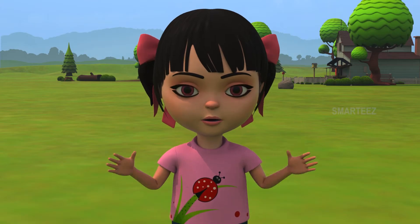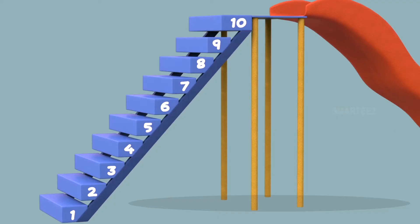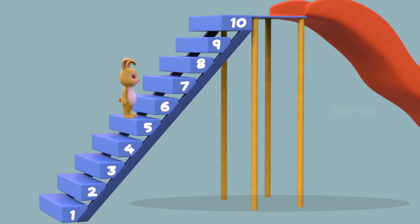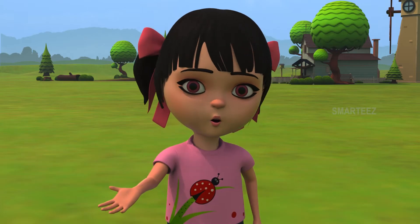Just calm down, yellow bunny. The number you are on is less than the other one. Let me explain. When the music stopped, the yellow bunny was on step number 5 and the pink bunny was on step number 7. We see step number 5 is lower than step number 7. We call this as 5 is less than 7. So, when a number is lower than some other number, we call it as less than the other number. Okay, bunnies. This round goes to the yellow bunny.